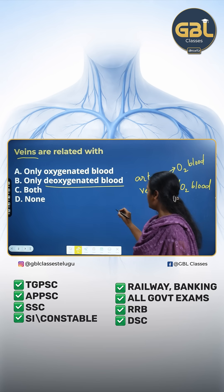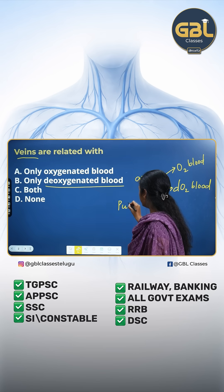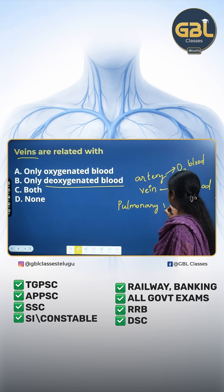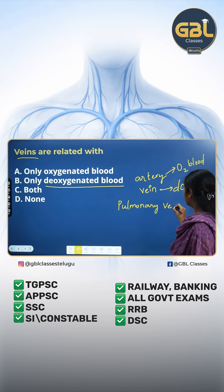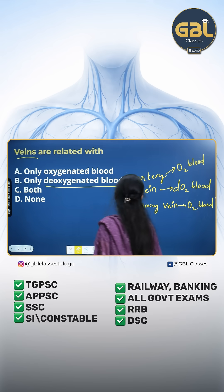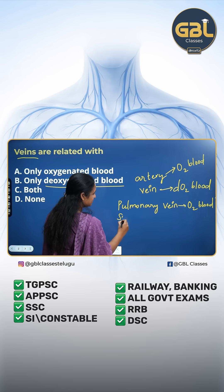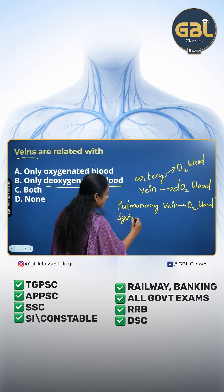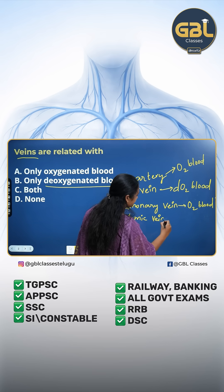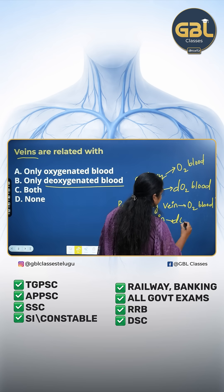There is some exception called pulmonary vein, which carries oxygenated blood. The other exception is systemic vein, which carries deoxygenated blood.